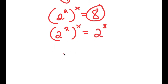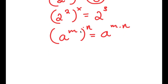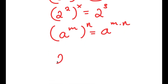If I have something in the form of a to the power of m to the power of n, this is equal to a to the power of m times n. So 2 squared to the power of x equals 2 to the power of 2 times x, which is simply 2 to the power of 2x. And this is equal to 2 to the power of 3.